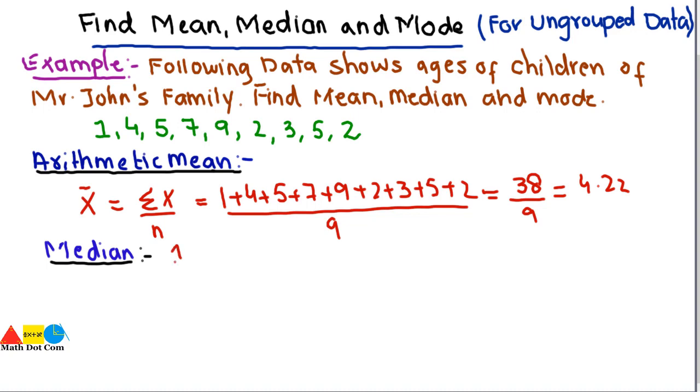So data will be arranged as 1, 2, 2, 3, 4, 5, 5, 7, and 9. So this is the arranged data in increasing order, from smallest to the greatest. So one thing that we have to do is just to use the formula for finding the median.